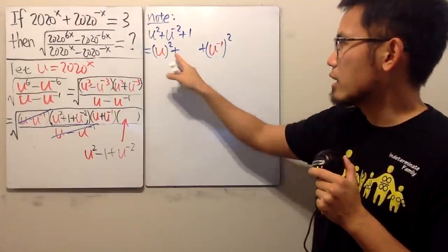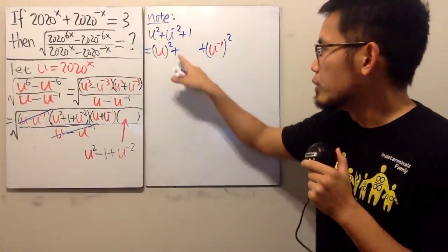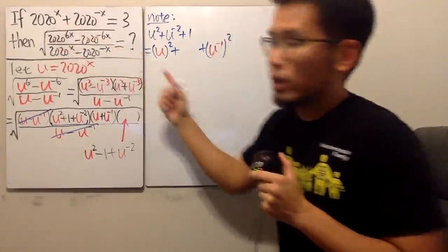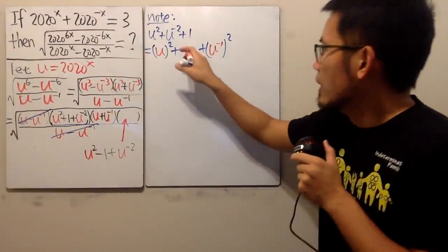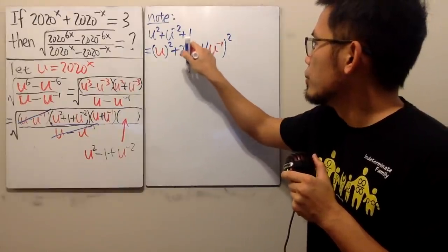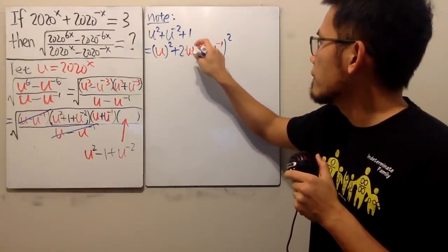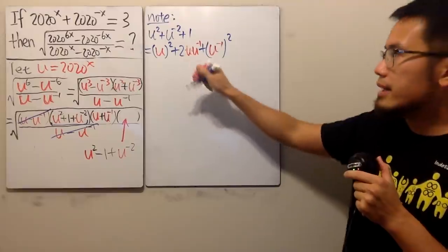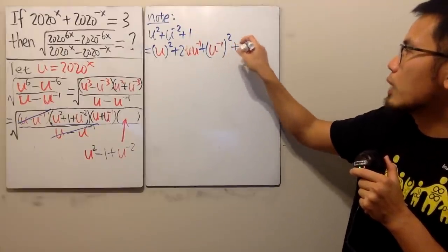If you want to get a perfect square right here with the plus in the middle, and the reason I want the plus is because I want the plus right here. In the middle, I will have to have two times this and that, namely, u times u to the negative one. And then don't forget, we still have the plus one after that.